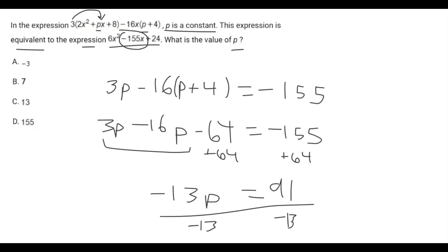Oh, I actually made a mistake here. It's negative 91, which makes sense because a negative over a negative. So negative 91 divided by negative 13 gives us p equals 7.